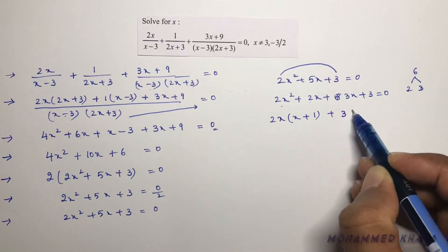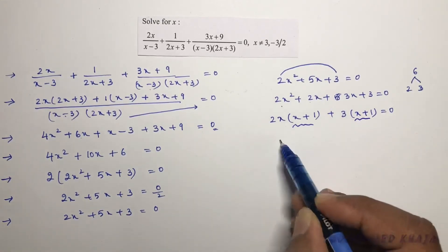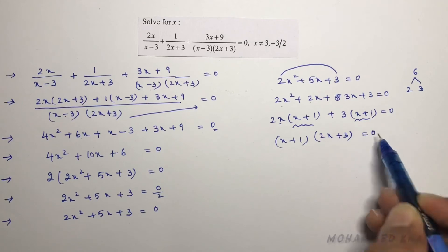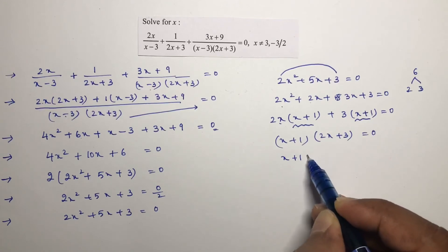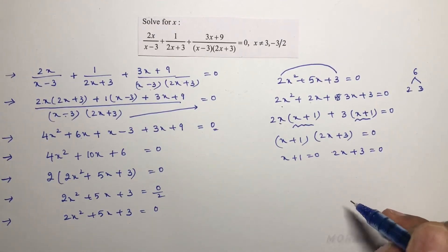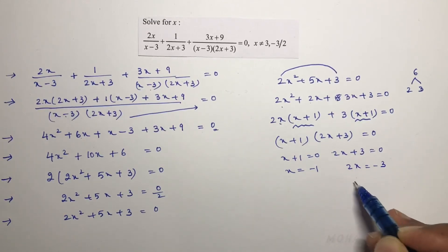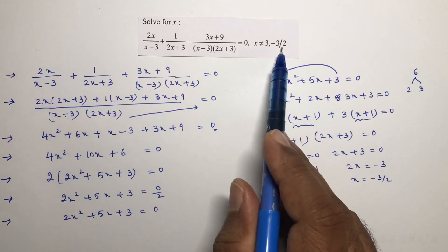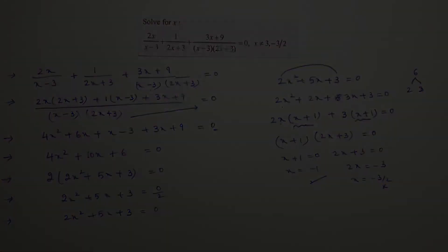Taking (x+1) as common factor: (x+1)(2x+3) = 0. So either x + 1 = 0, giving x = -1, or 2x + 3 = 0, giving x = -3/2. But the question already states x is not equal to -3/2, so that value is rejected. Therefore, x = -1 is the correct solution.